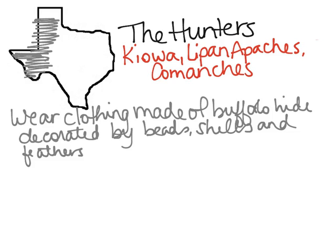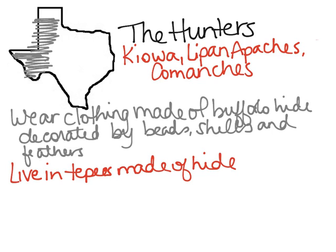The hunters wear clothing made of tanned buffalo hide, sometimes deer skin if available, decorated with beads, shells, and feathers. They also use buffalo hide to make teepees, which are the homes they live in. Teepees are larger than the dome-shaped huts of the plant gatherers in central Texas, large enough for a whole family, but they can still be easily taken apart.